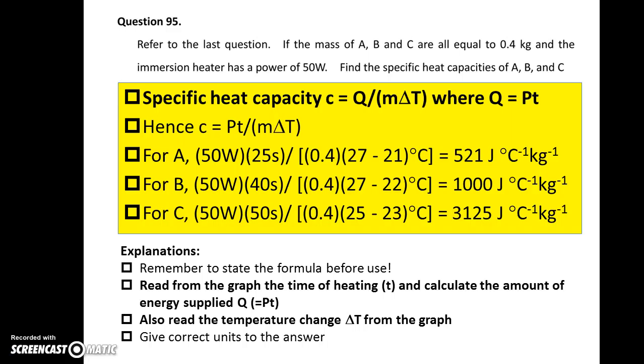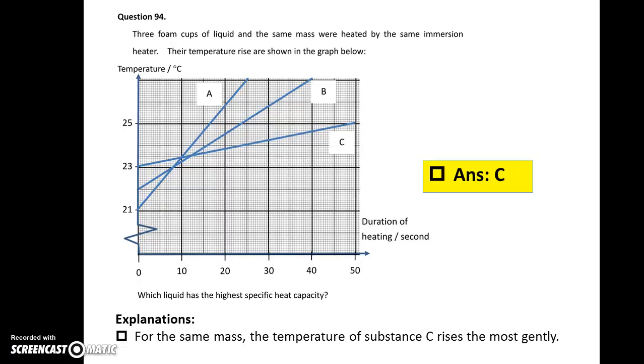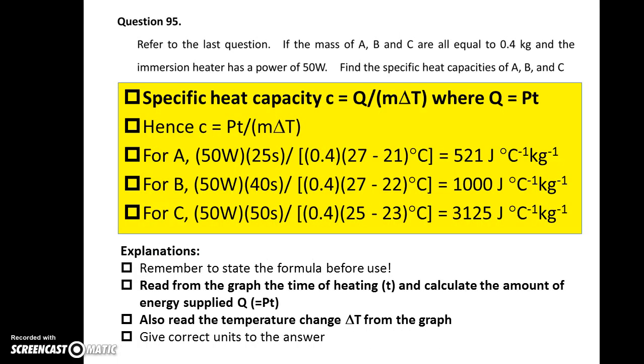Question 95. Using the graph given in question 94, can you calculate the specific heat capacity of the substances A, B, and C? The energy Q is given by power multiplied with the time of heating. And the time of heating can be found from the graph. The temperature rise can also be found from the graph. And for the answers which are specific heat capacity, the unit should be Joules per degree Celsius per kilogram.